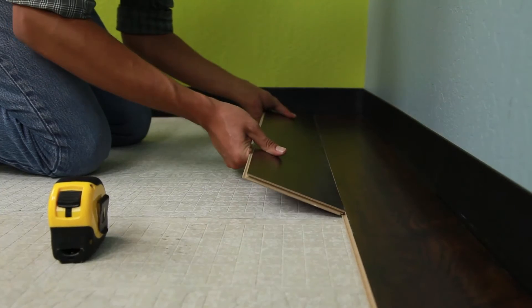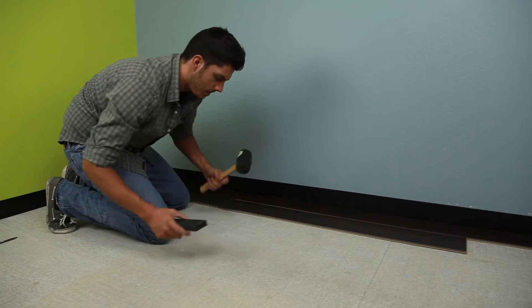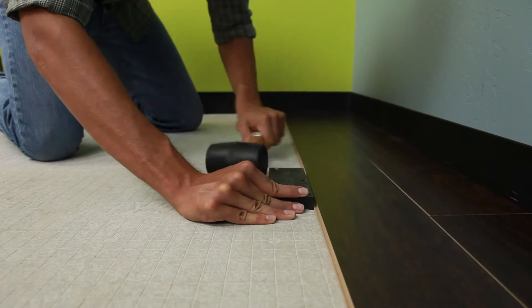As you continue to lay the flooring, use the tapping block and rubber mallet to tap the planks into a lock position and secure any seams.